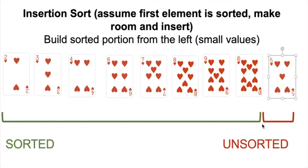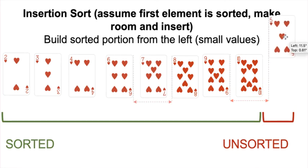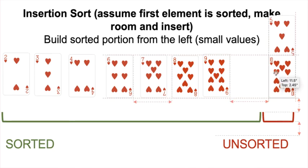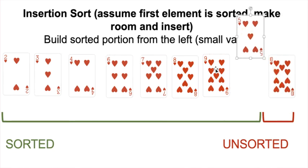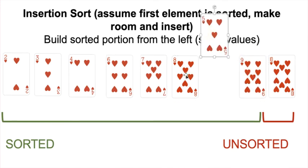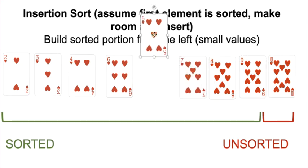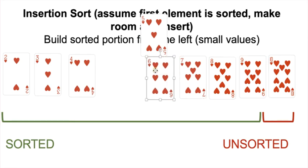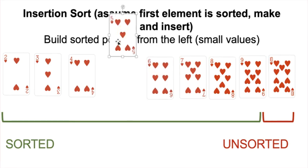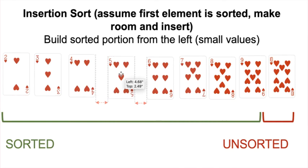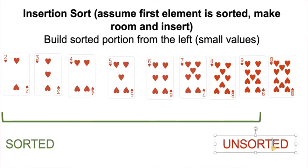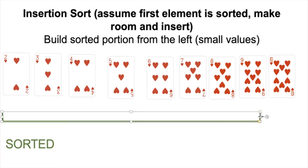Five is our last card to insert. Is five smaller than ten? Yes — make room. Five smaller than nine? Yes — make room. Five smaller than eight? Yes — make room. Five smaller than seven? Yes — make room. Five smaller than six? Yes — make room. Five smaller than four? Nope — so we insert between the four and the six. Our unsorted portion just shrunk by one and our sorted portion just grew by one, and we're at the end of the array, which means our entire hand of cards is now sorted.